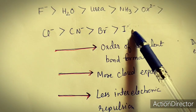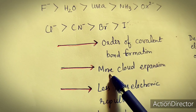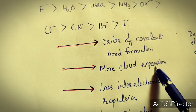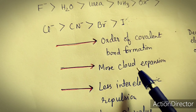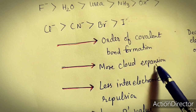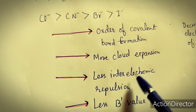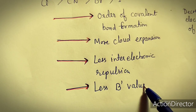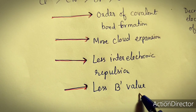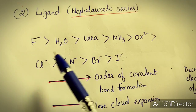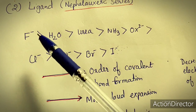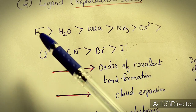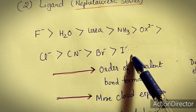Moving toward the right side of the nepheloxetic series for ligands, covalent bond formation character increases. More covalent bond formation leads to more cloud expansion, which leads to less inter-electronic repulsion, lower B', and therefore lower beta. So the nepheloxetic ratio beta decreases from left to right across this series — it decreases with increasing covalent bond character of the ligand.